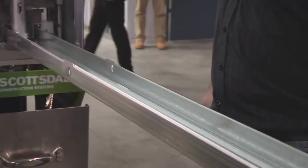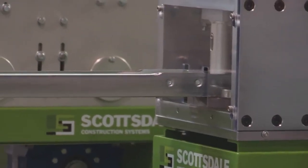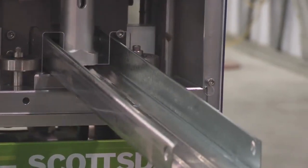The roll former does all the cutting, punching, notching, swaging and measuring of members to millimeter accuracy.